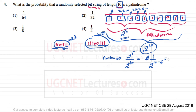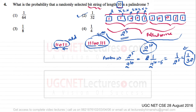This gives us 1 upon 2^5, which is 1 upon 32. So the probability that a randomly selected bit string of length 10 is a palindrome is 1/32. The answer is option number 2, which is 1 upon 2 raised to power 5. This question was asked in UGC NET CSE on 28th August 2016.